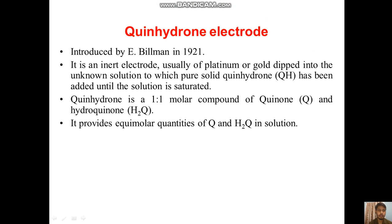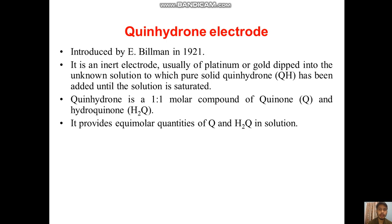We have already talked about metal ion electrodes and glass electrodes in previous videos. Now we will see another electrode: the quinhydrone electrode, which was introduced by E. Biilmann in 1921. It is an inert electrode, usually of platinum or gold, dipped into an unknown solution.